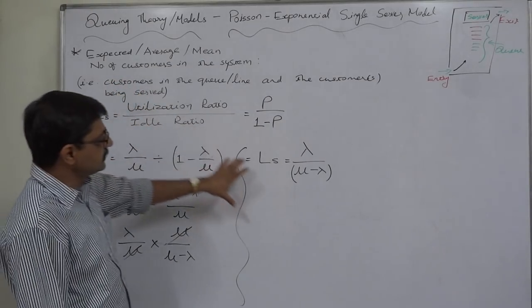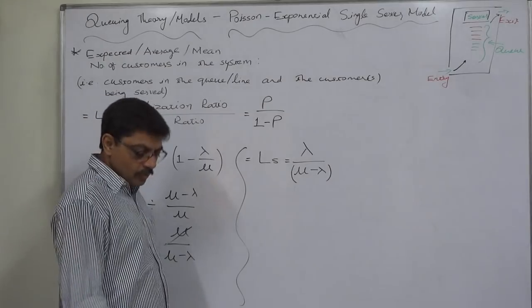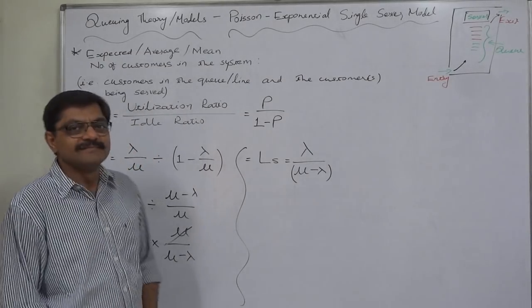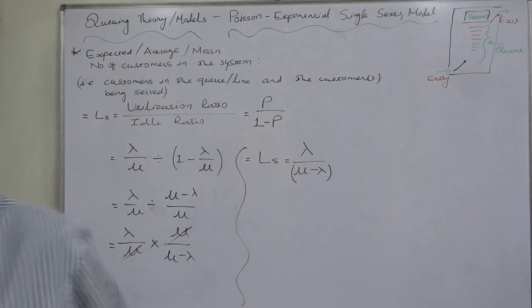So this is a very simple derivation and ultimately now we have a formula of mean or expected or average number of customers in the system that is lambda divided by mu minus lambda. That's it, thank you, thank you.